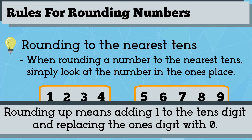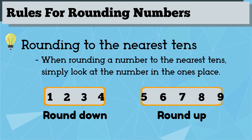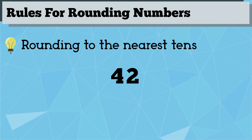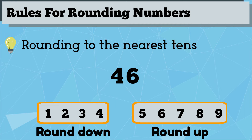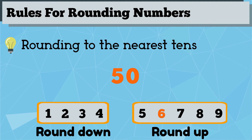For example, if we have 42, since the ones digit is 2, we round the number down to 40. But if instead we have 46, since the ones digit is 6, we round the number up to 50.